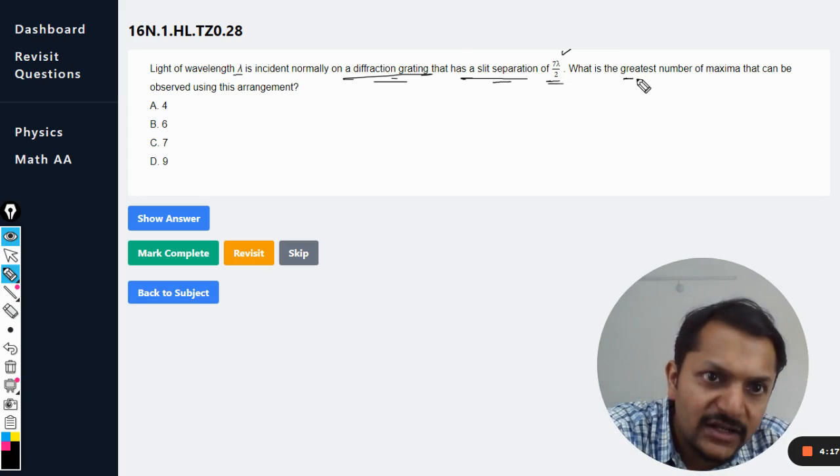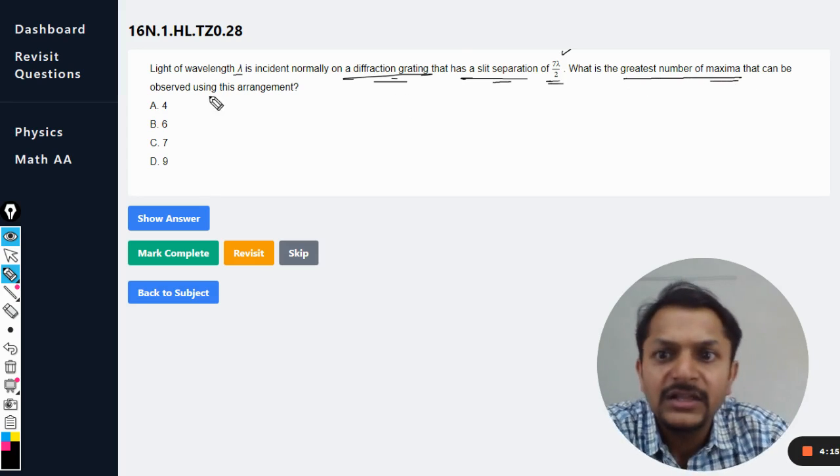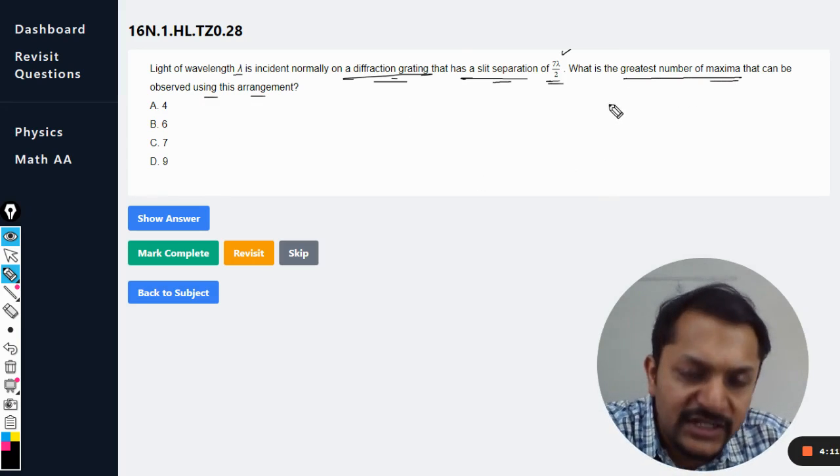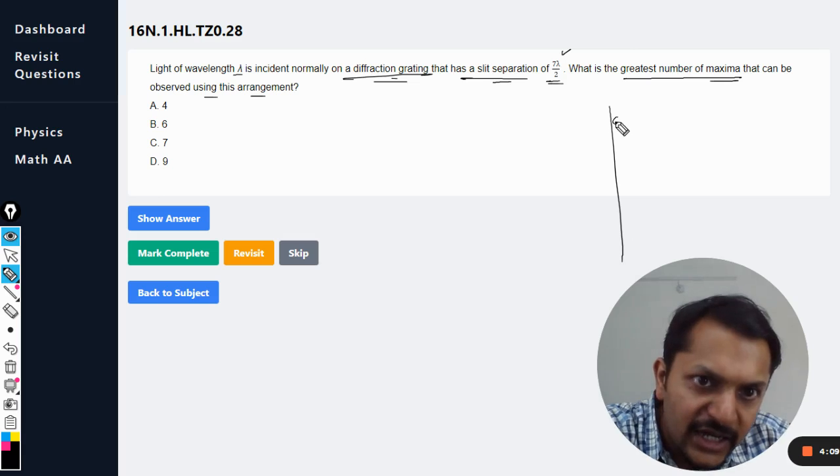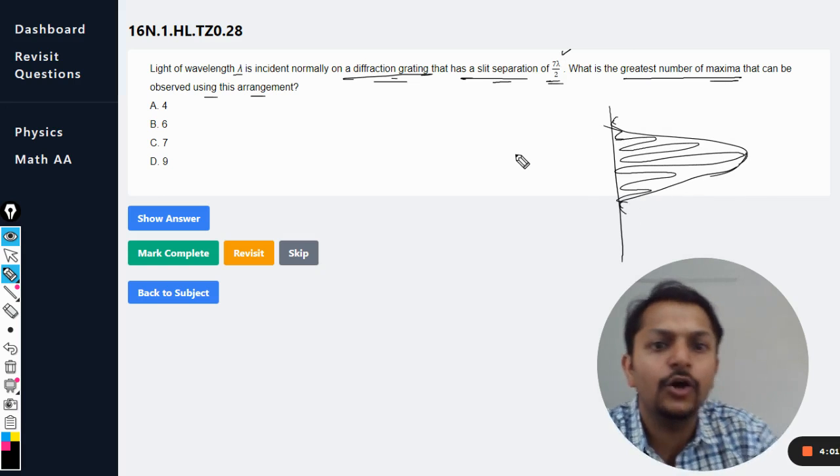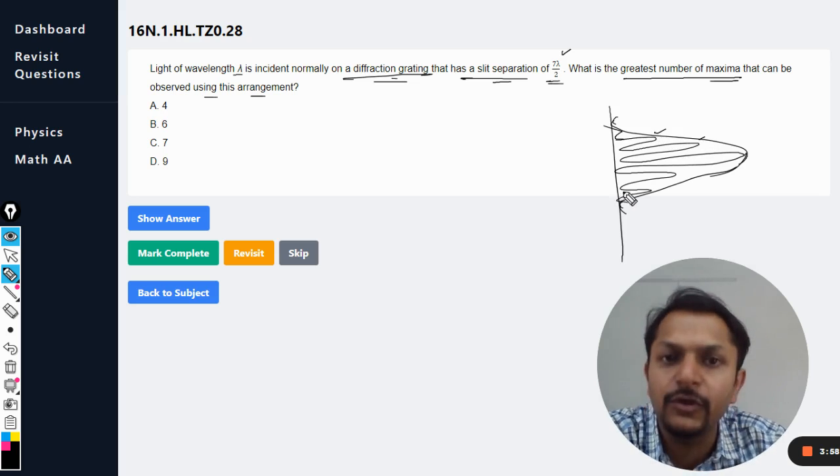What is the greatest number of maxima that can be observed using this arrangement? Obviously there will be this kind of a pattern and it would be modulated with the diffraction pattern. So this is diffraction, the interference will be somewhat like this. We want to find how many maximas will be visible.